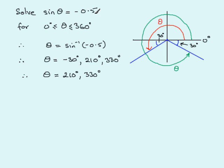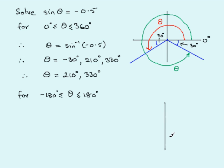You might encounter a different range. A common alternative is theta between minus 180° and 180°. If this were the case, we draw exactly the same quadrant diagram: mark 0°, identify where sine is negative — the third and fourth quadrants — draw two lines equally inclined to the horizontal, then decide which values of theta fall within this new range.